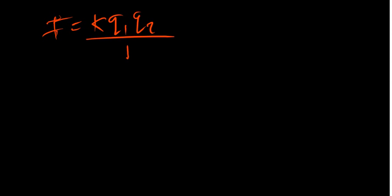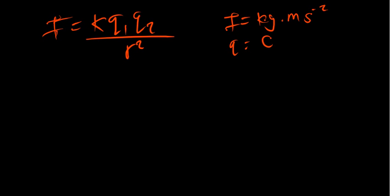Now, what if we have been given the electric force formula: F = k·q1·q2 / r²? Let's find the units of k. Force can be expressed as mass times acceleration, which is kg·m·s⁻². Charge q is in Coulombs, and radius r is in meters. We rearrange to get k = F·r² / (q1·q2), and now we substitute the units.